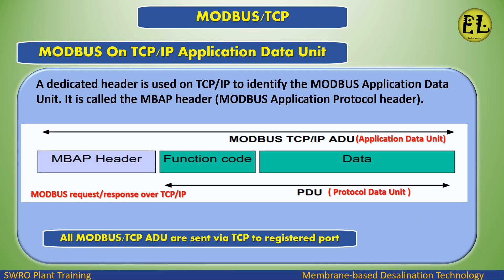Modbus on TCP/IP application data unit: A dedicated header is used on TCP/IP to identify the Modbus application data unit, called the MBAP header (Modbus Application Protocol header). The protocol data unit consists of a function code plus data. All Modbus/TCP ADUs are sent via TCP to a registered port.